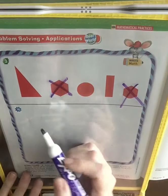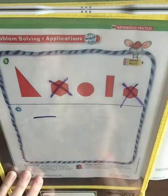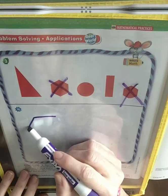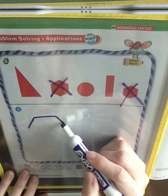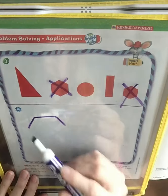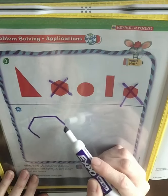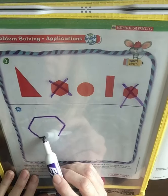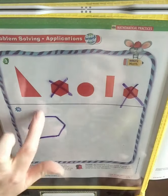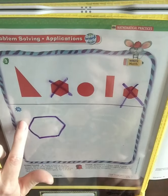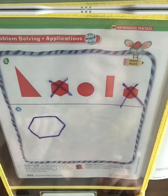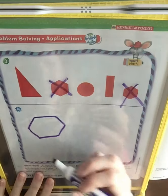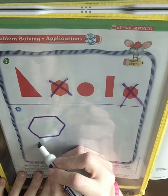So let's draw a hexagon. First you want to draw the line on top, then draw two lines coming out, then two lines coming in — but you don't want those to touch because you have the line at the bottom to connect them. And you have one, two, three, four, five, six sides and one, two, three, four, five, six vertices. And we'll write the word hexagon.